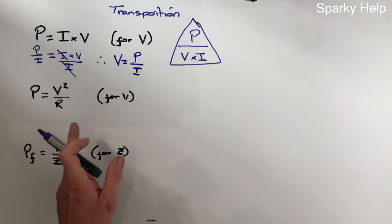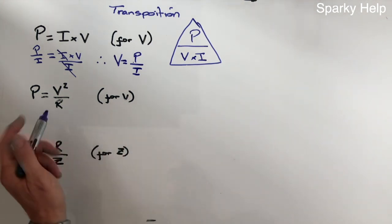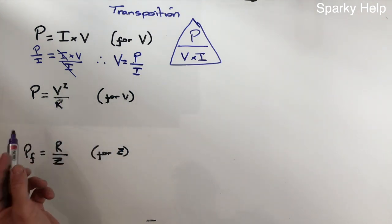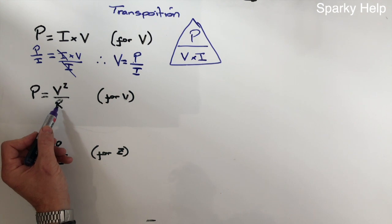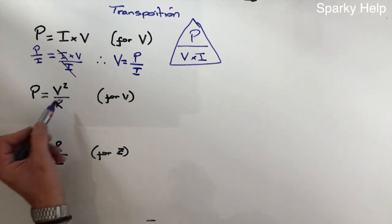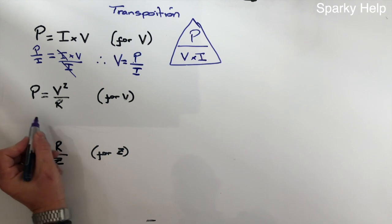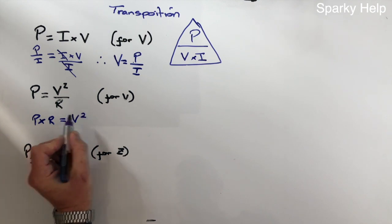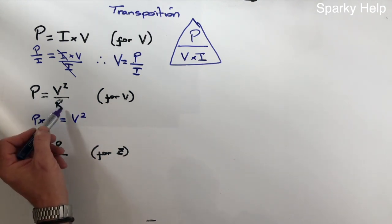This one, not quite so easy because you can't fit it in a triangle because you've got a square in there, and we want to find V. But basically we have to do the same thing again. Let's get rid of the R. R is dividing, the opposite to divide is multiply, so that becomes P times R equals V squared. That gets rid of this and basically it moves over there.